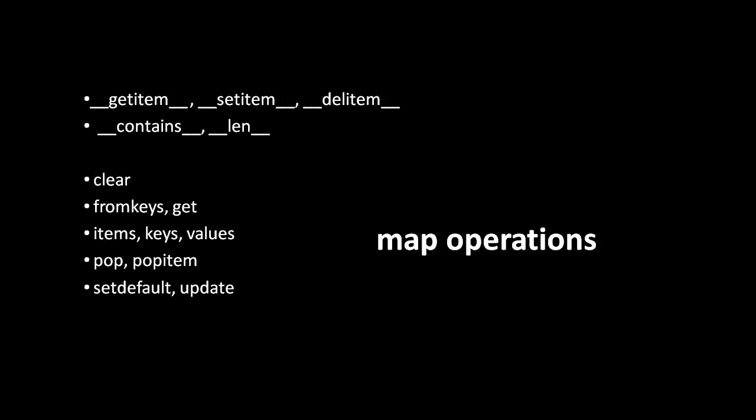As for maps, first off we have most of the same special methods: getItem, setItem, delItem, contains, and len — and what they do is fairly evident, just the same thing applied to a map instead of a sequence. The only subtle thing to keep in mind is that the contains method will search only amongst the keys of the map, not the values.